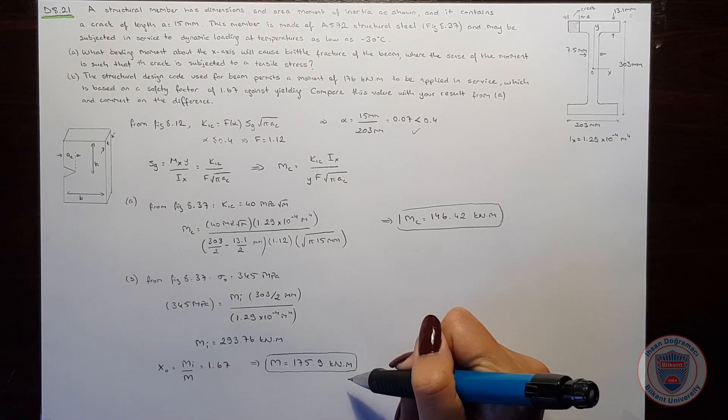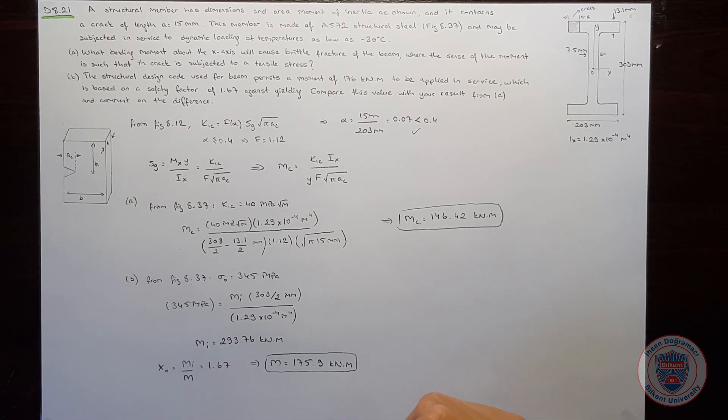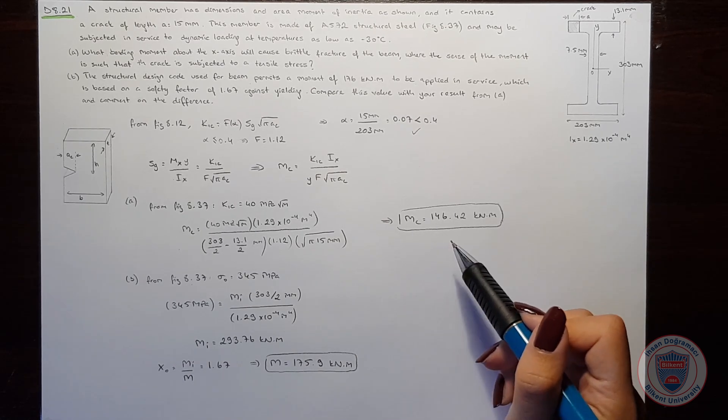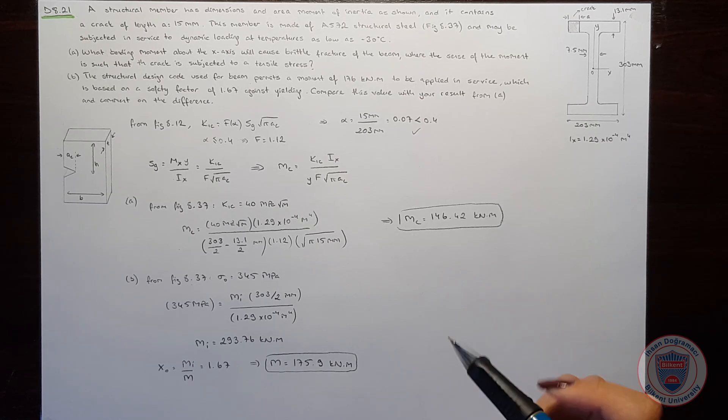Even though this value is close to the permitted moment in service, which is 176 kNm, the critical moment is smaller. And this means fracture may occur before reaching 176 kNm.